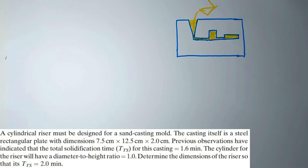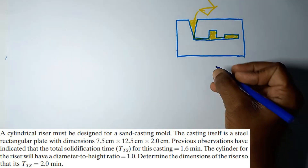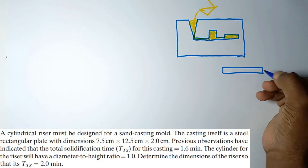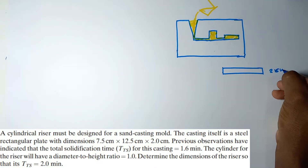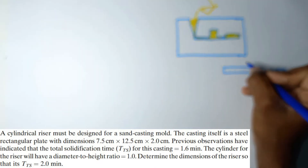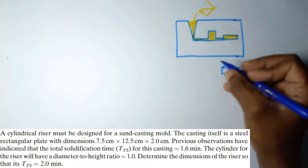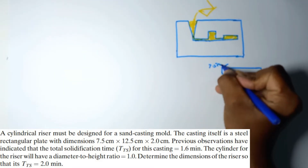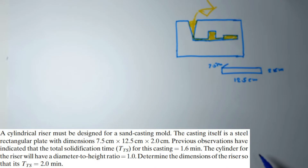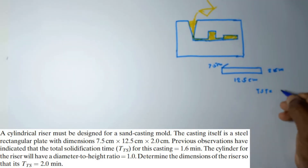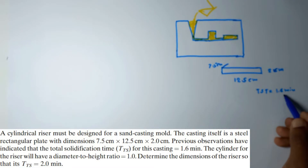The casting dimensions are given — it's a rectangular shape plate. Let me draw the casting: 2 centimeter thickness, its length is equal to 12.5 centimeter, and the width is equal to 7.5 centimeter. Also, the solidification time for this casting is given as 1.6 minutes — the total solidification time for this casting is 1.6 minutes.